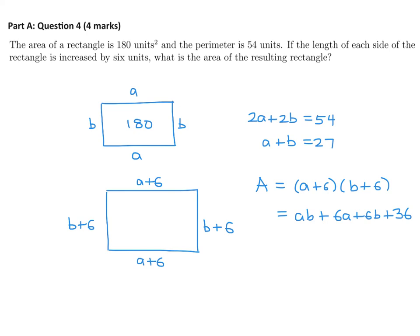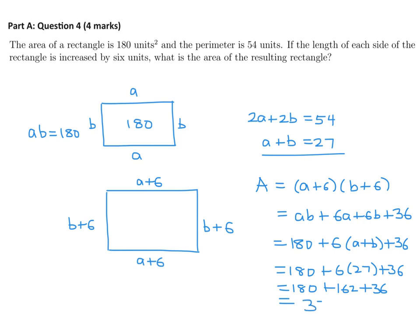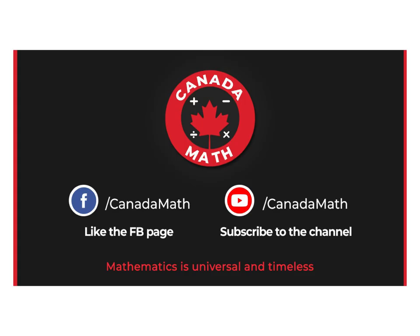Now AB I know, because the dimensions are A and B. So to get that area, we would have to have multiplied A times B. So AB is basically the area, which is 180. And here I can factor out the six and get A plus B. And that's 36. A plus B is 27. So I've got everything I need. Six times 27 plus 36. And when you crunch out these numbers, you get 180 plus 162 plus 36. And that equals 378. That is the area of the resulting rectangle.